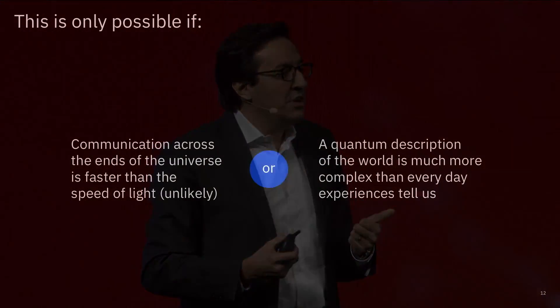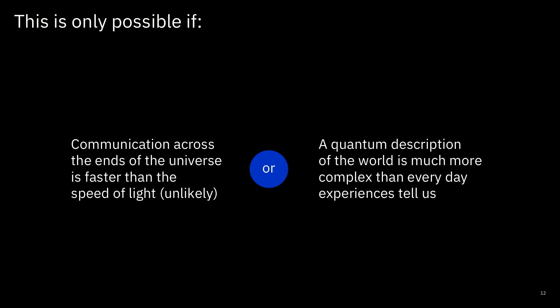Now that is mind blowing. And one or two things are going on. Either communication across the ends of the universe is faster than the speed of light. We think that that's very unlikely. Or a quantum description of the world is much more complex than everyday experience tells us, meaning we're violating a principle of locality. Somehow we are sharing properties across vast distances in ways that we cannot explain classically.